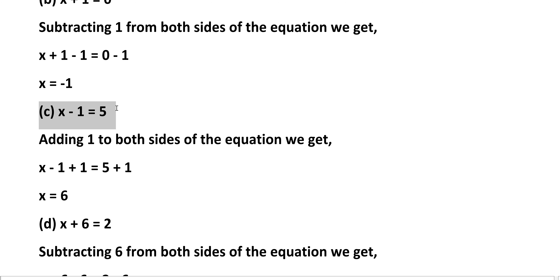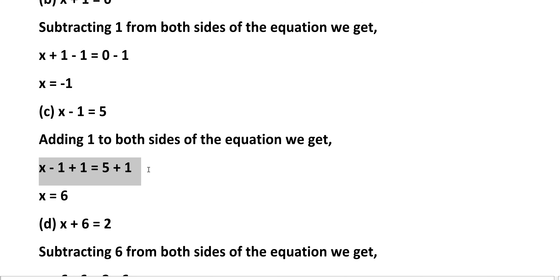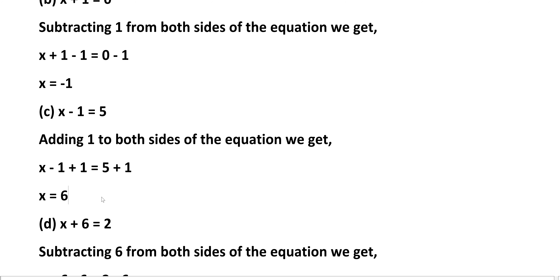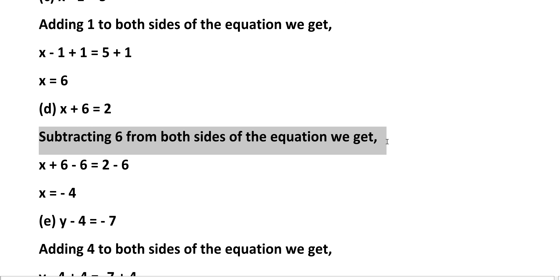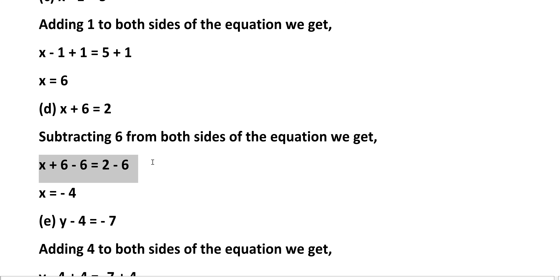C: x minus 1 equals 5. Adding 1 to both sides of the equation we get x minus 1 plus 1 equals 5 plus 1, that equals x is equal to 6. Because x will be separated from the numbers, that's why we add both sides or subtract both sides or divide and multiply. The constant value will be on LHS and RHS will be the number. D: x plus 6 equals 2. Subtracting 6 from both sides: x plus 6 minus 6 equals 2 minus 6, that equals x is equal to minus 4.